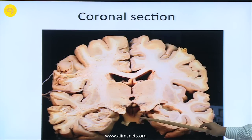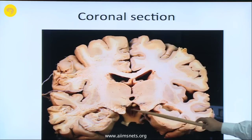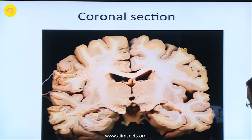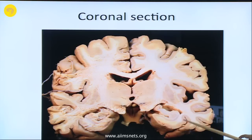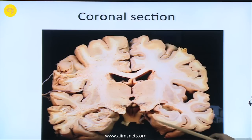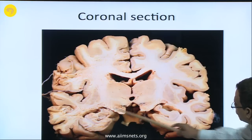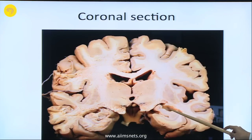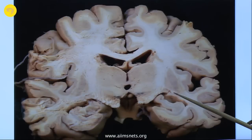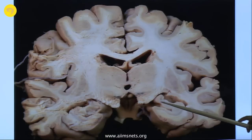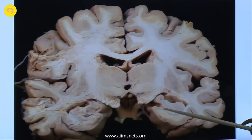You can see the optic tract, optic chiasma — the infundibulum and infundibular stalk is damaged, so you can see the opening. Here I want to show you the cortex has turned inside to form the hippocampus. On this side also hippocampus, and the inferior horn of the lateral ventricle is here; hippocampus is forming the floor of the inferior horn.